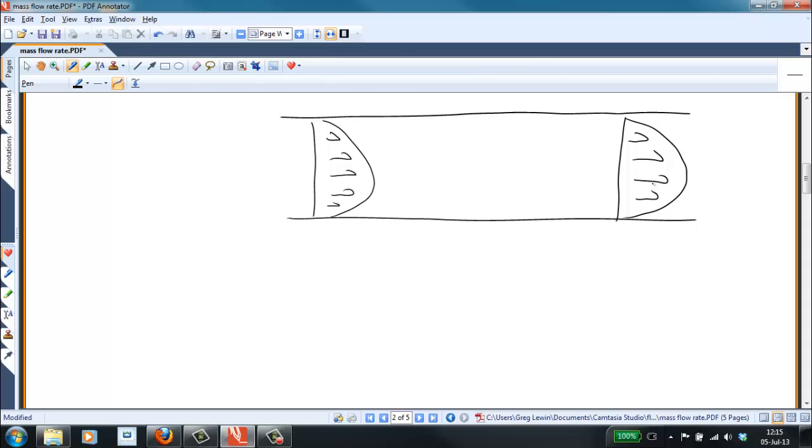We're told that at section one, the pressure is 100 psi absolute and the temperature is 540 Rankine. Nice of them to convert to Rankine for us. At the outlet, somewhere downstream in this pipe, the pressure has decreased substantially to 18.4 psi absolute.